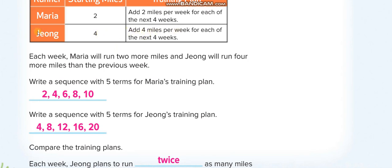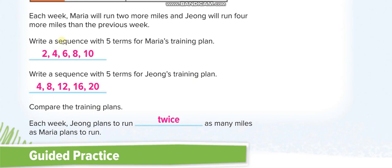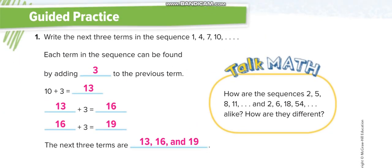For Jeong, starting is 4 and add 4 each time. So the rule is add 4 for Jeong: 4, 8, 12, 16, 20, like that. So what is the difference between them? Each week Jeong plans to run twice as many miles as Maria plans to run. So he is running twice, two times, like two times 2 is 4, two times Maria's amount.